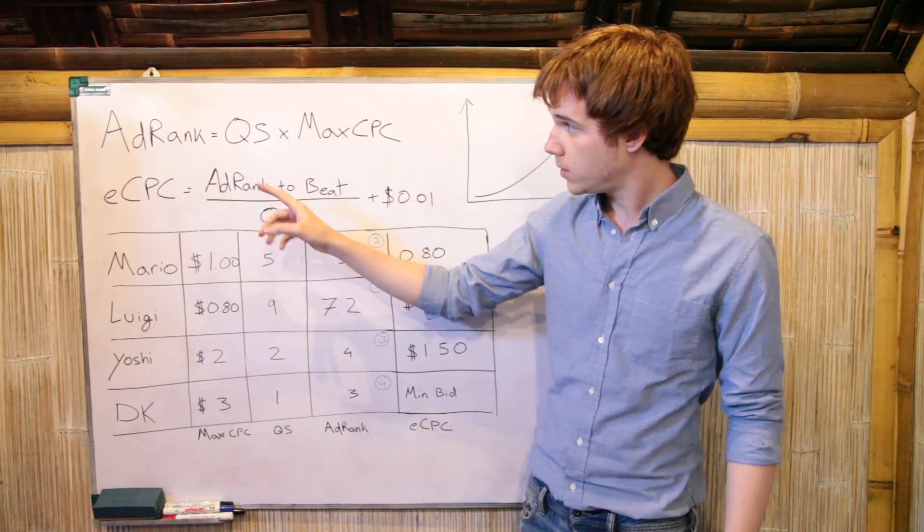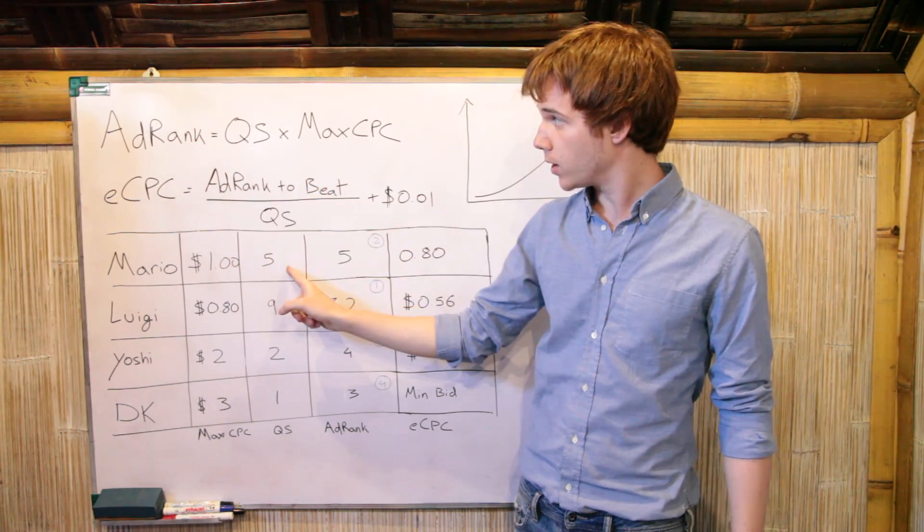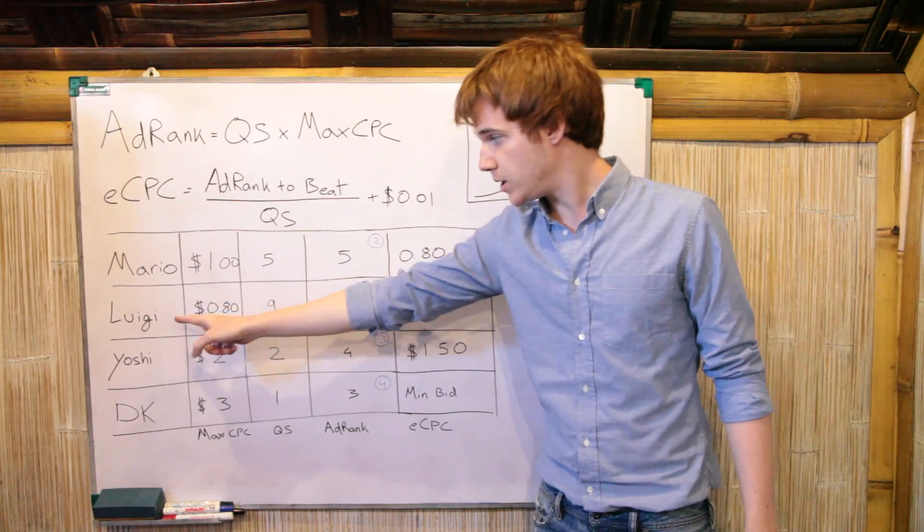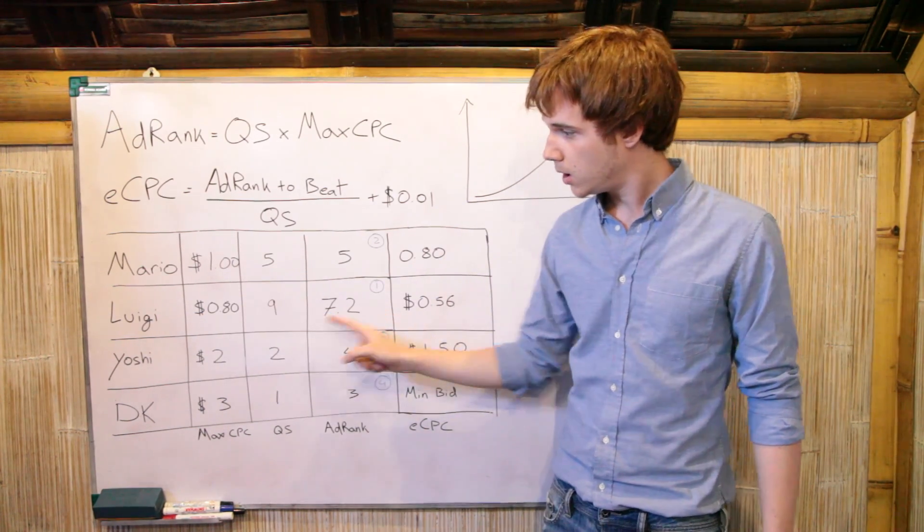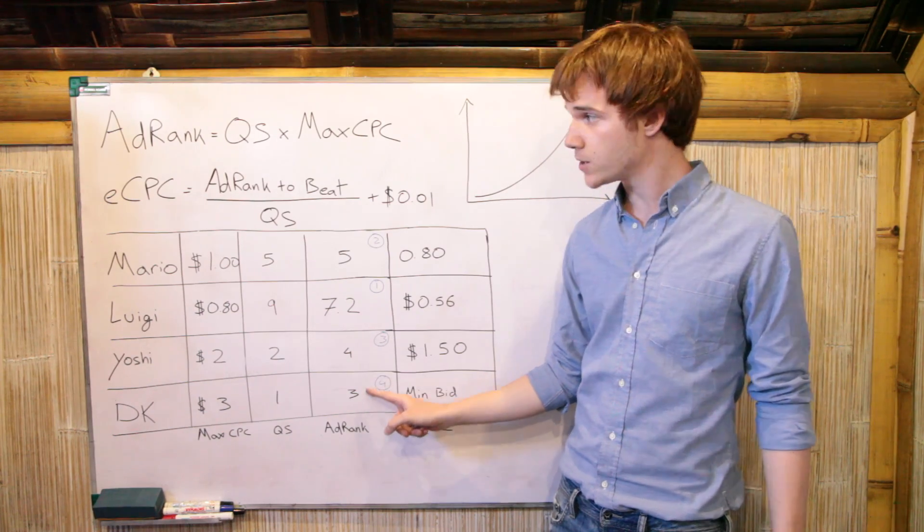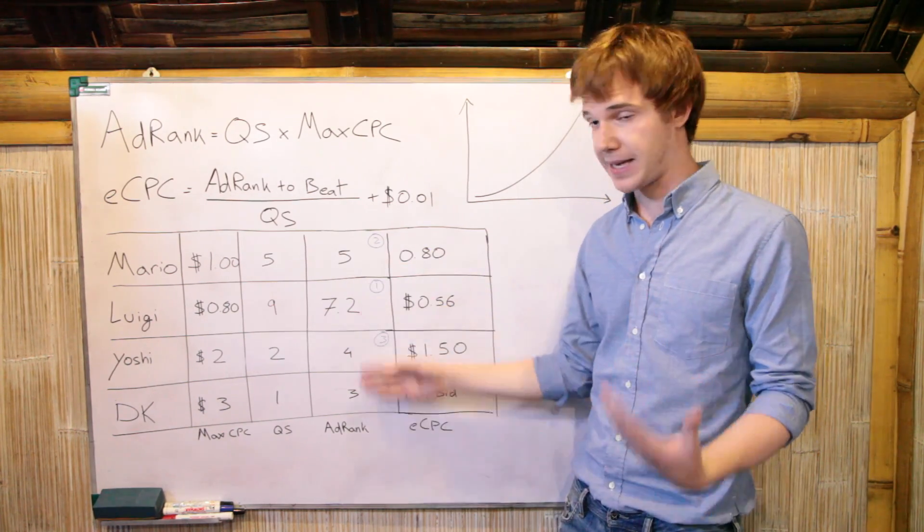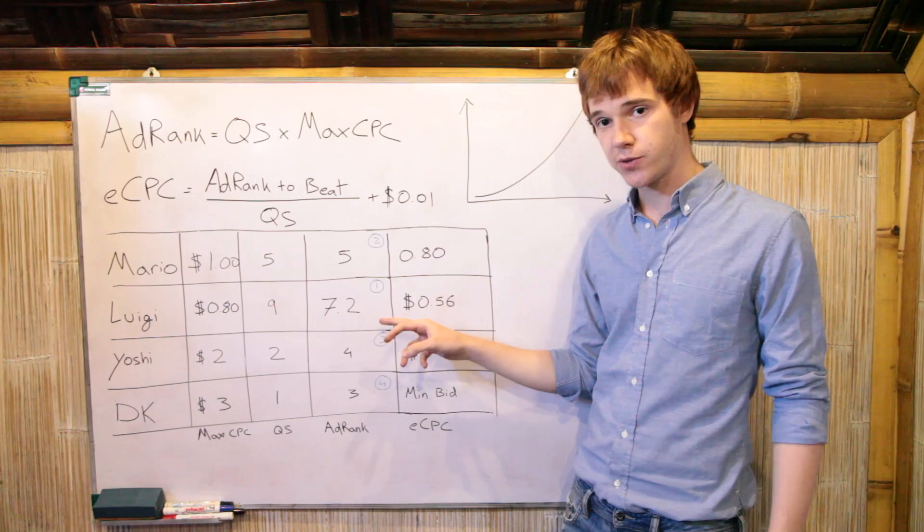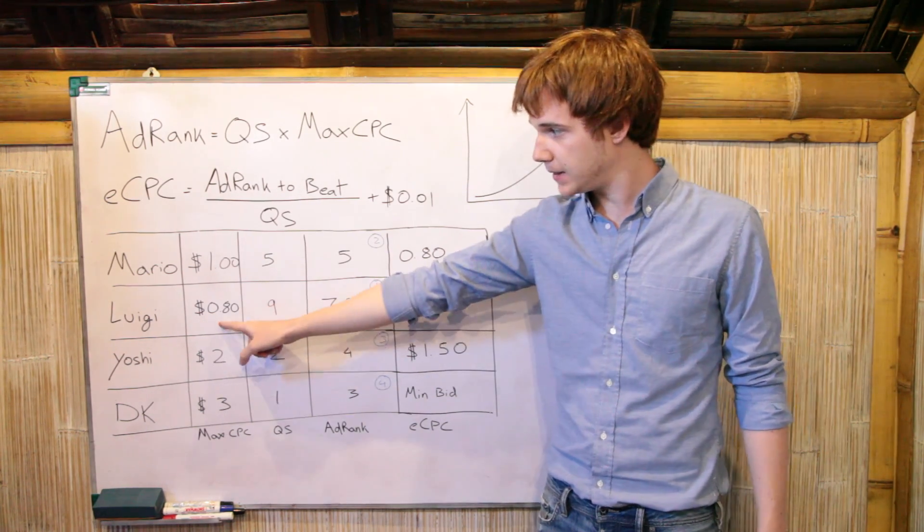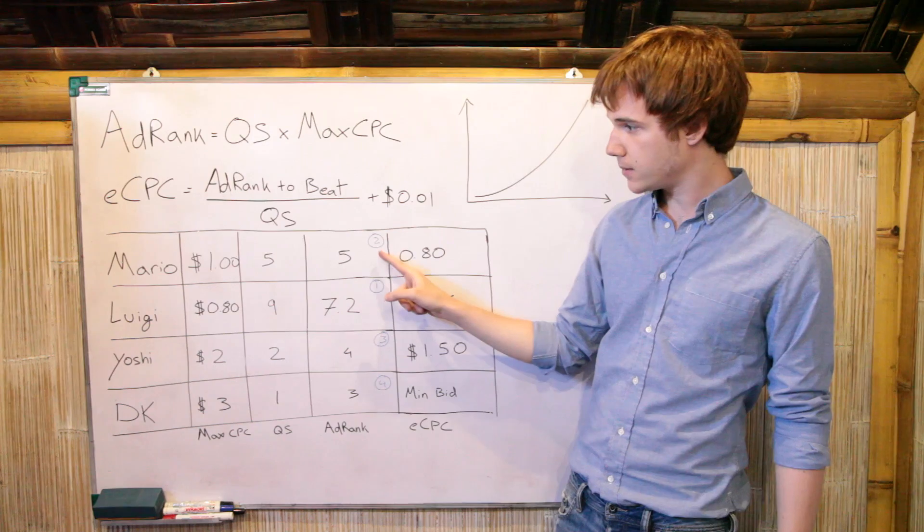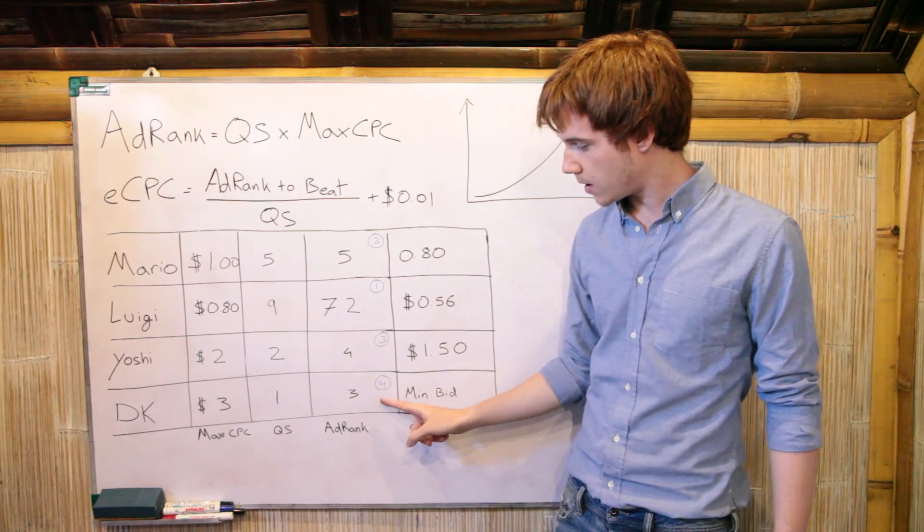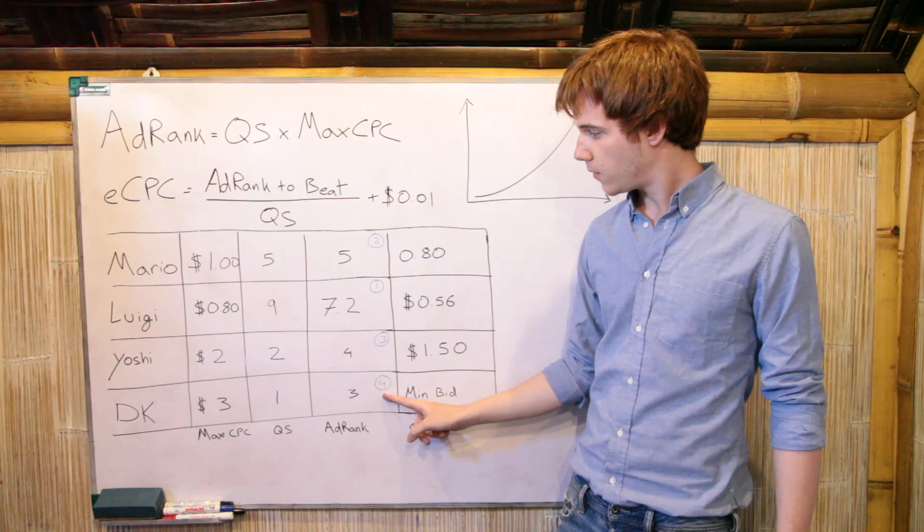So how does this play out? Where is AdWords going to place their ads? So as we know, AdRank is equal to Quality Score times Max CPC. So Mario scores 5. Luigi scores 7.2. Yoshi scores 4. And Donkey Kong scores 3. And so this is how AdWords is going to place their ads on the Google search results page. Luigi's actually going to score first. Isn't that crazy? He's paying less than Mario. Mario's going to score second. Yoshi's going to score third. And Donkey Kong is going to score fourth.